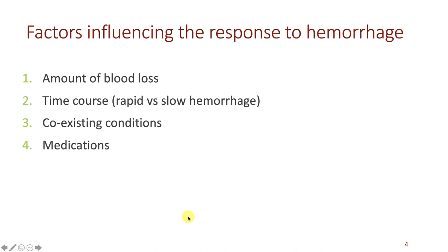A variety of factors influence the response to hemorrhage. One that should be obvious is the amount of blood loss — whether it's 10%, 20%, 40%, or even more. The greater the blood loss, the lower the pressure will be and the longer it will take to recover, if there is recovery at all. Also the time course of the hemorrhage is very important. A very rapid hemorrhage will produce a greater and more rapid fall in blood pressure compared to a slow hemorrhage, which gives the body time to activate compensatory mechanisms.